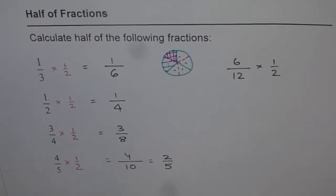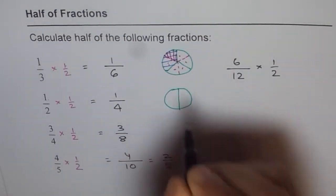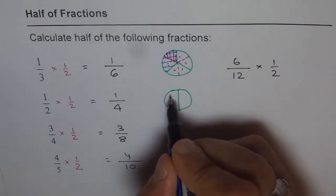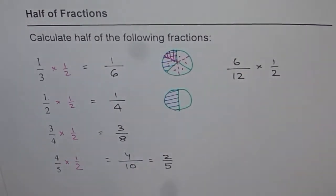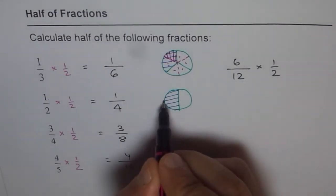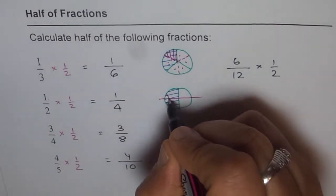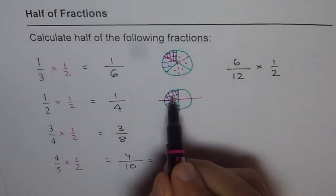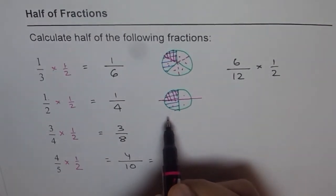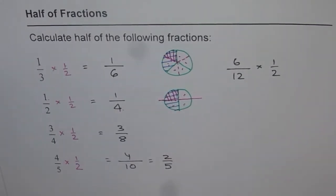Let's do it once again, this time with half itself. We make a circle, divide it into 2 halves, and shade one half. Now we are looking for half of this — let's slice it in half. So half of this half will be one of those pieces. How much is that? 1, 2, 3, 4 — 4 are the total number of parts, so that goes in the denominator. One of them is what we selected: 1 fourth.